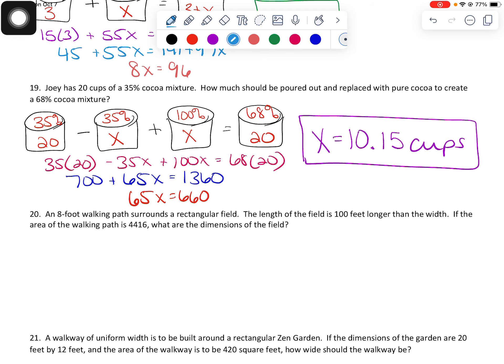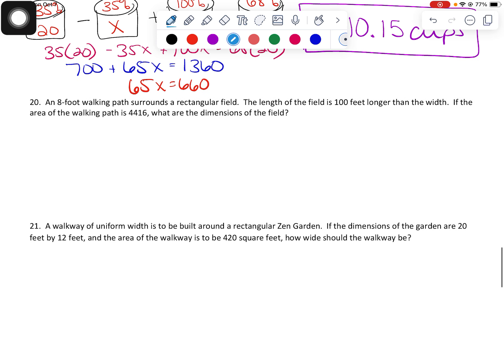Sliding on down to number 20, we're going to move into the border questions. So we're going to need to read it, annotate it, turn it into an equation, and solve it. Eight-foot walking path surrounds a rectangular field. So here's my rectangular field.